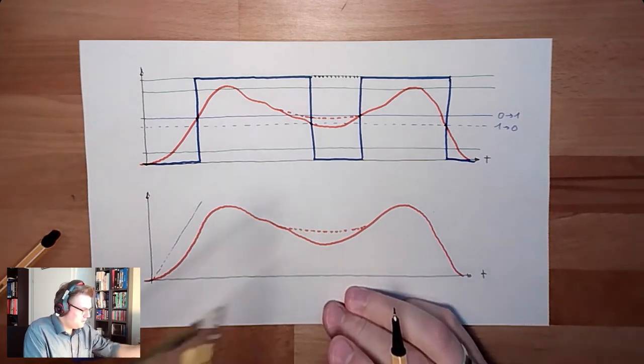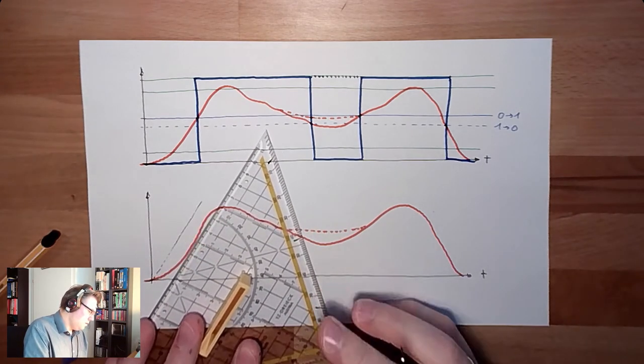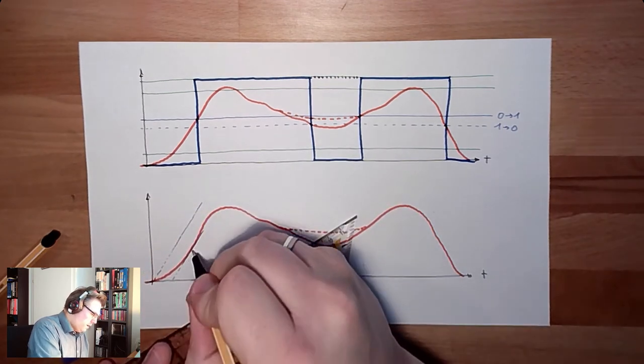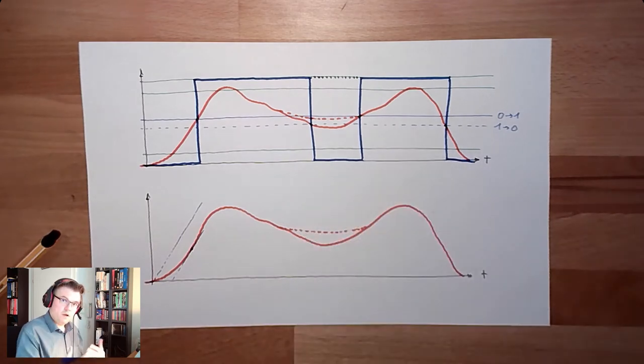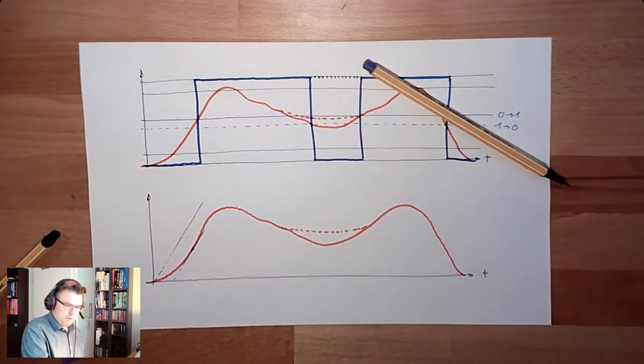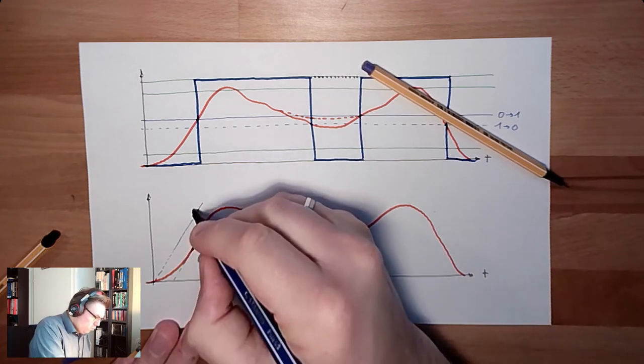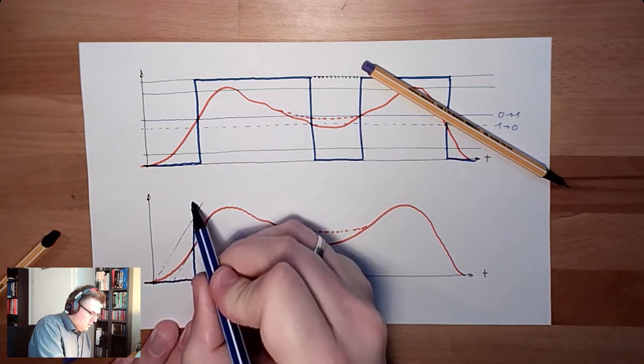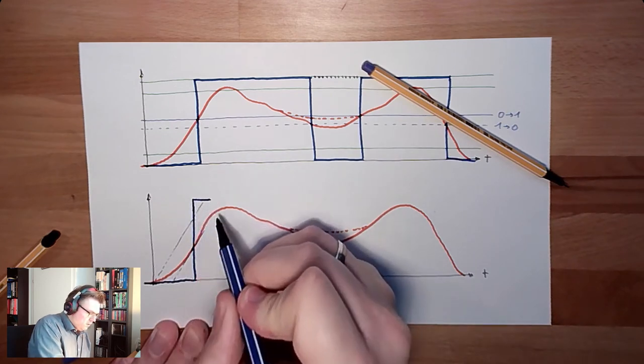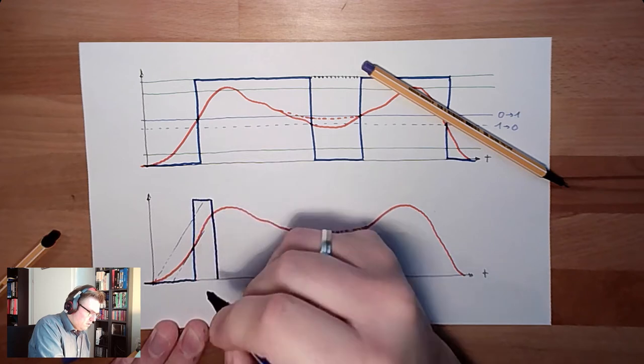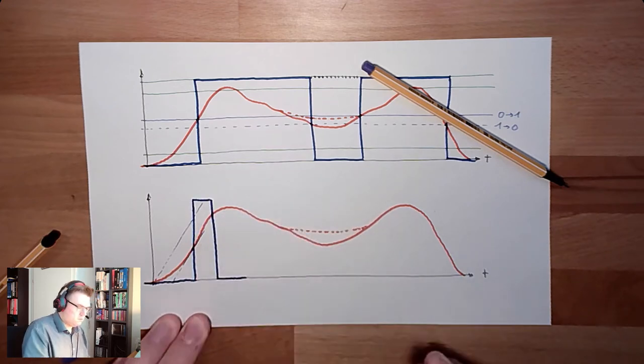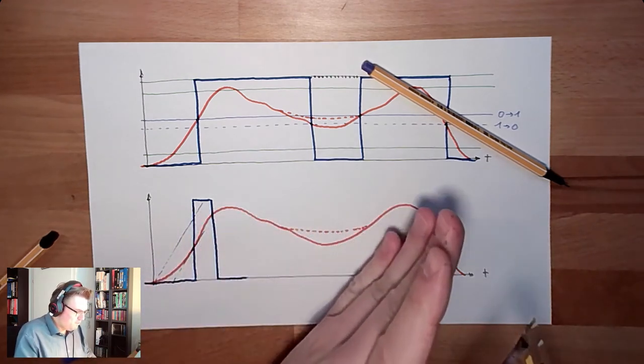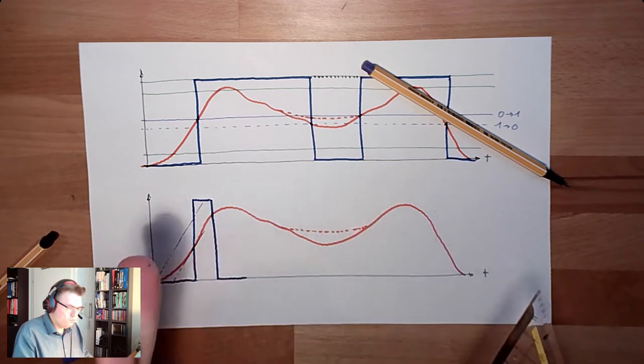Let's say this is the steepness to be reached to interpret this as a rising edge. If we shift this with our root to here, then exactly at this point we are getting higher, we have a higher steepness. So we will switch here to one. And dynamic inputs usually only switch for a very short time period and then disappear again. We will never reach the steepness again. No impulse.